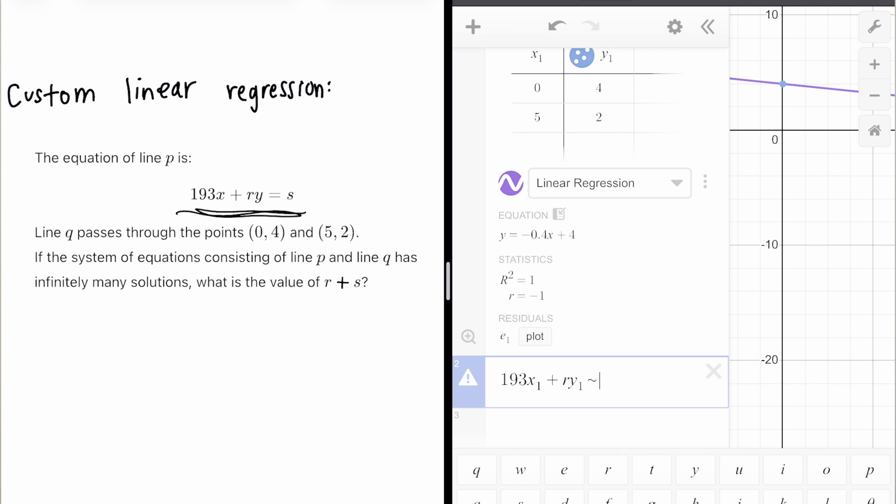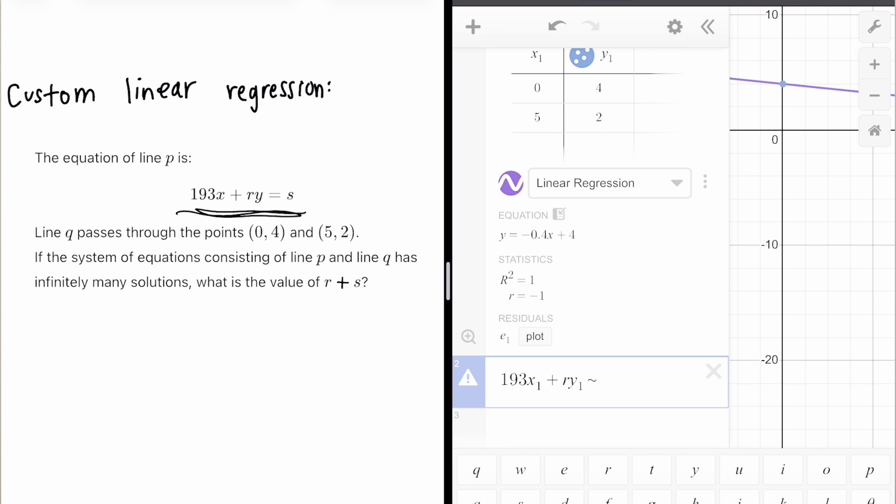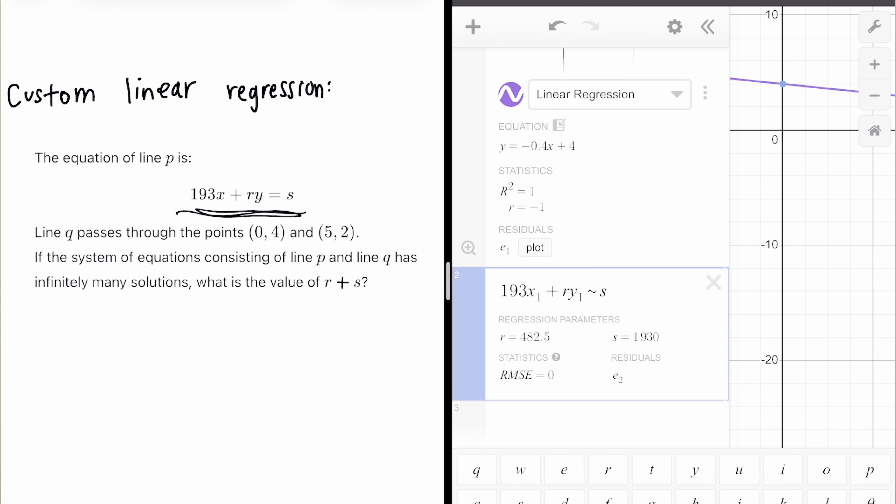Now, instead of the equal sign, do the regression sign. It's tilde. It's probably on the top left of your keyboard if you're using a computer and then put S and see how you get R and S right here. Again, this is allowed on the SAT.